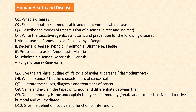Next, give the graphical outline of the life cycle of the malarial parasite, mainly Plasmodium vivax. It has both the asexual and sexual cycle, so you need to read about this important topic — the life cycle of the malarial parasite. Then, what do you mean by cancer? List the characteristics of cancerous cells, and illustrate the causes, diagnosis, and treatment protocol for cancer. Also name and explain the different types of tumors, mainly benign and malignant, and differentiate between these two kinds.